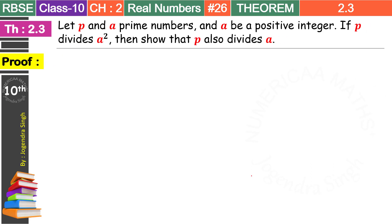So what does this theorem say? This theorem says: let P be a prime number and A be a positive integer. If P divides A square, then show that P also divides A. So in simple language, we are given two numbers P and A, where A is a positive integer, and if P divides A square, we have to prove that P will also divide A.